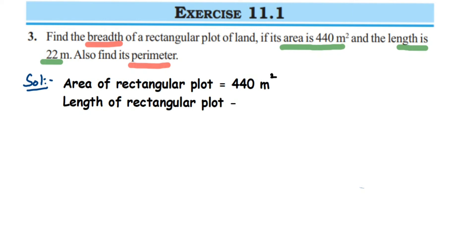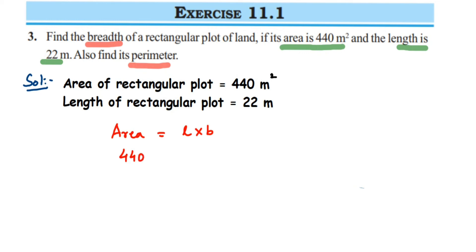We know the area of rectangle formula: area of rectangle is length into breadth. So in place of area, I'm going to write: length into breadth. Area we know is 440, so 440 is equal to length into breadth. Length is 22, so 440 is equal to 22 into breadth.